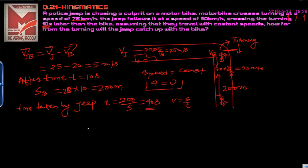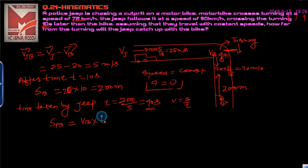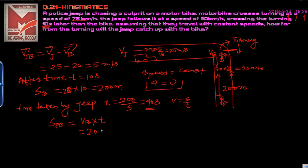So the jeep requires 40 seconds to catch the bike. Since the jeep's speed is 25 m/s and the bike's speed is 20 m/s, the jeep can catch up. The distance covered by the bike in those 40 seconds is speed into time, which is 20 multiplied by 40, giving 800 meters.